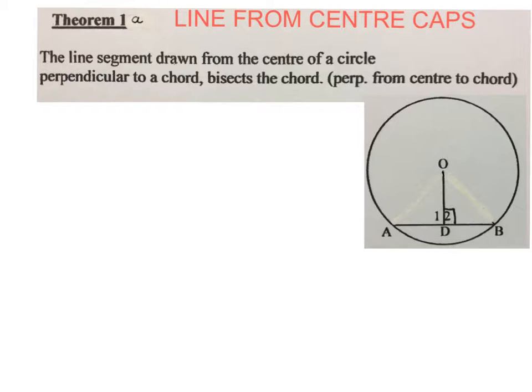Good day. In this video we're going to look at the proof of theorem 1 in circle geometry. It's about the line from the center, the line segment actually, from the center of a circle. What does it do? You must learn this paragraph because it explains exactly what it is, and in some question papers you might have to complete it. They might start the sentence for you and leave out the latter part. And here is the abbreviation we're going to use.